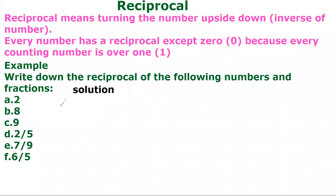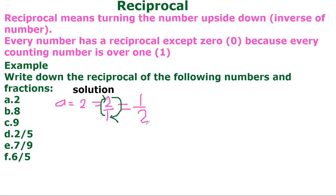Now A: that is two. The reciprocal here — we know that two is a whole number and every whole number is over one. So two is the same as two over one. The reciprocal of two over one means you are going to turn the number upside down. The two will go to the bottom and the one will be at the top. So our final answer here will be one over two.